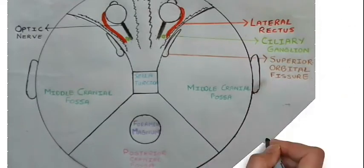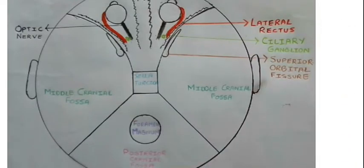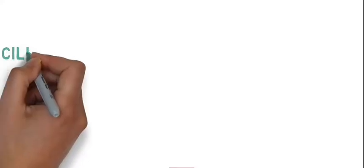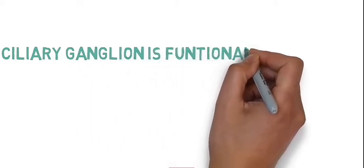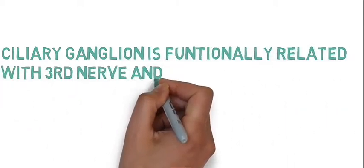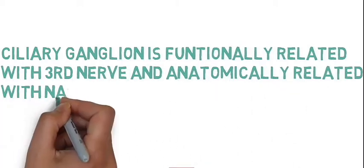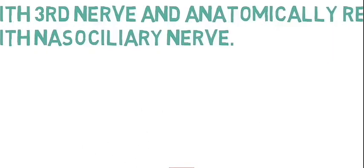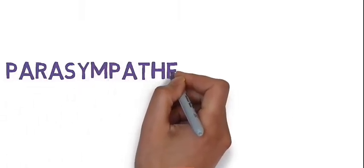Here you see the cross-section of the cranium from above. The green dot shows the location of the ciliary ganglion. The ciliary ganglion is functionally related to the third nerve and anatomically related to the nasociliary nerve. Now let's see its connections.